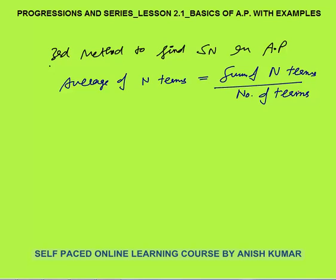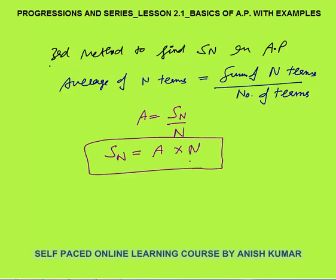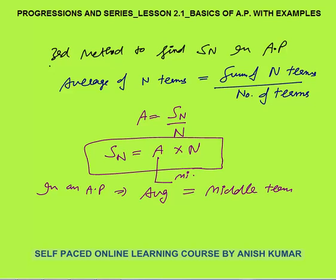There is a third method to find the sum of n terms in an AP. We know that average of n terms equals sum of n terms divided by number of terms. So sum of n terms equals average into n. Very important: in an AP, the average is always equal to the middle term. So if you can calculate the middle term, you can always calculate the sum of first n terms.